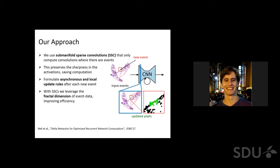In addition, by using sub-manifold sparse convolutions in combination with this approach, we can leverage the intrinsic fractal dimension of event data to further improve efficiency. Here again you see that now the updated region is no longer a square but actually is confined to these dark pixels here.